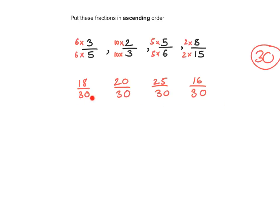Now that the bases are the same, we can compare these fractions. Which one is the smallest? Clearly 16 over 30 is the smallest, so I'll label that number 1. The next one is 18 over 30, so I'll label that number 2. Then 20 over 30, labelled number 3. And the last one is number 4, which is 25 over 30.